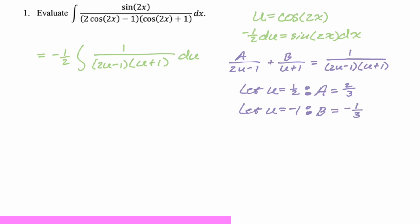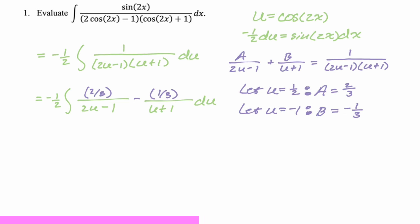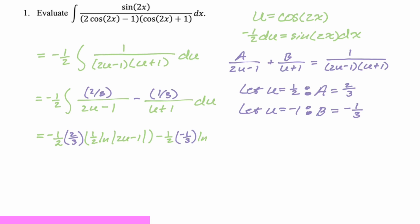Let's rewrite our integral. There's a negative 1/2 on the outside, and then we have 2/3 over (2u minus 1), minus 1/3 over (u plus 1), du. I'm going to integrate both separately. I'll factor out 2/3; by the chain rule there should be a 2 in the numerator, so I put a 1/2 outside and get natural log absolute value of (2u minus 1). Then there's a minus 1/3, and this is just a straight natural log of absolute value of (u plus 1), plus C.